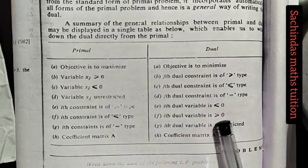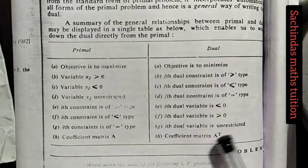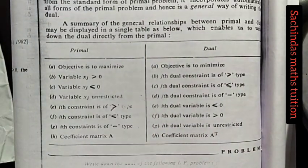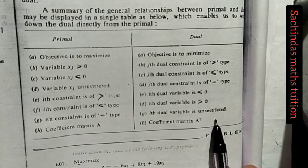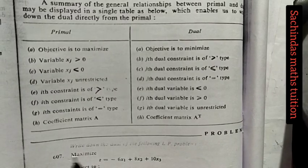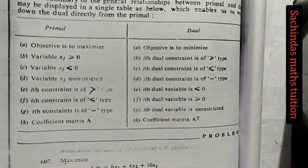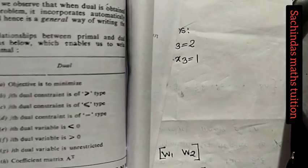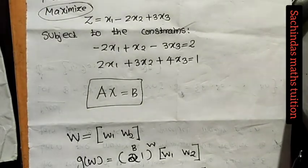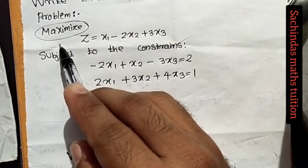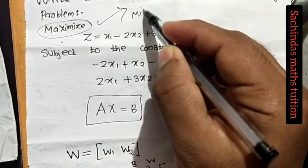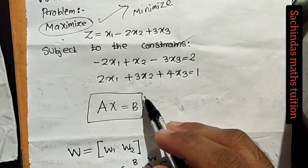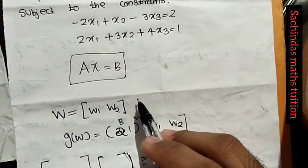It is equal to 0. If you have less than or equal to in the primal, it is greater than or equal to in the dual. If you have an equality constraint, it is unrestricted. If the primal is to maximize, it will be minimize for the dual. If we have less than or equal to, it will be the minimization problem.